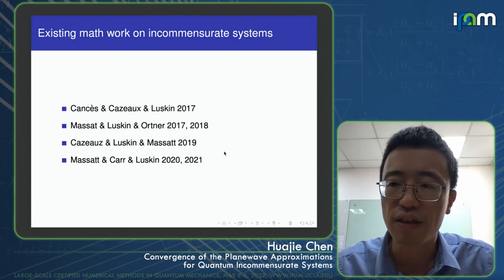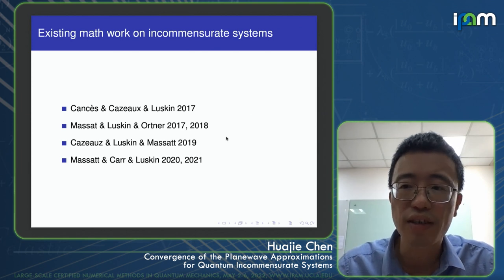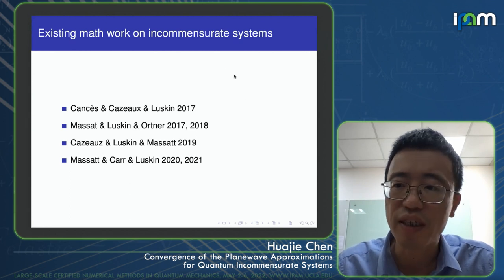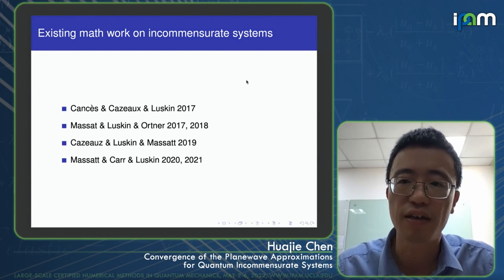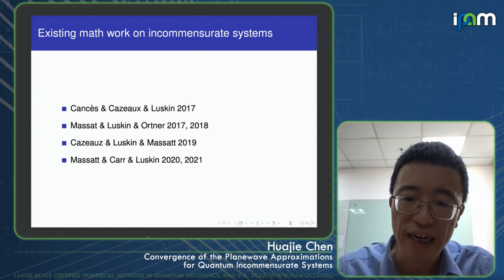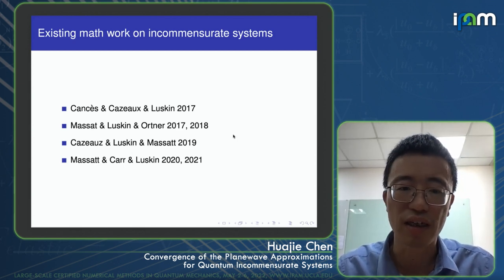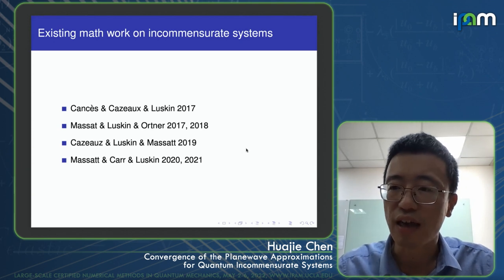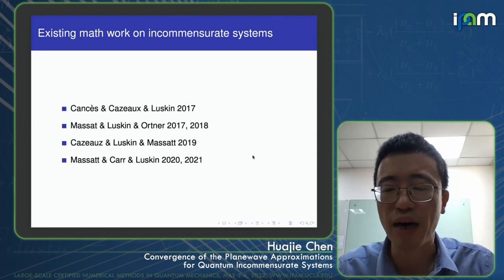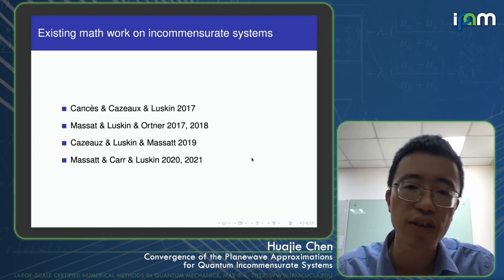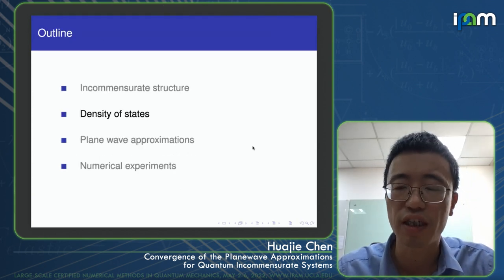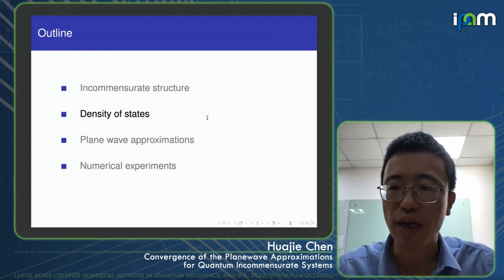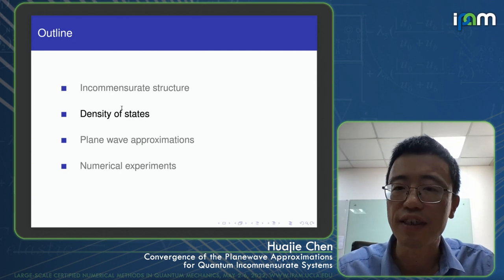It is of great interest to construct numerical simulations for this type of system. Due to the loss of periodicity, this problem is mathematically difficult, and there are very limited mathematical works. Most existing works are related to tight-binding models in electronic structure calculations. In this work, we mainly focus on continuous models and are interested in the spectrum distribution, the so-called density of states.